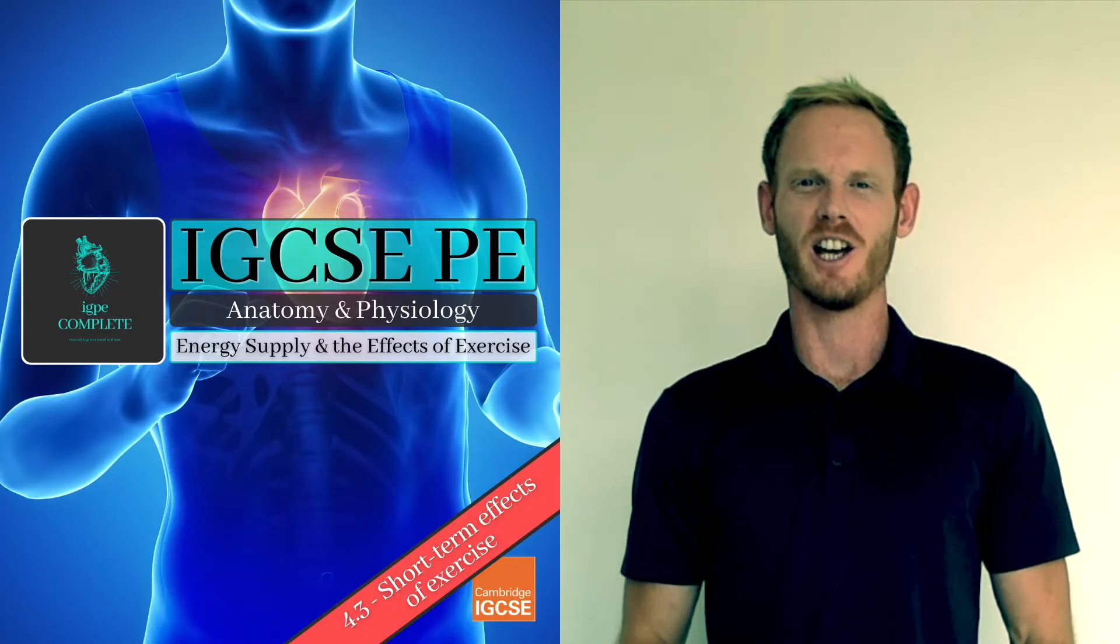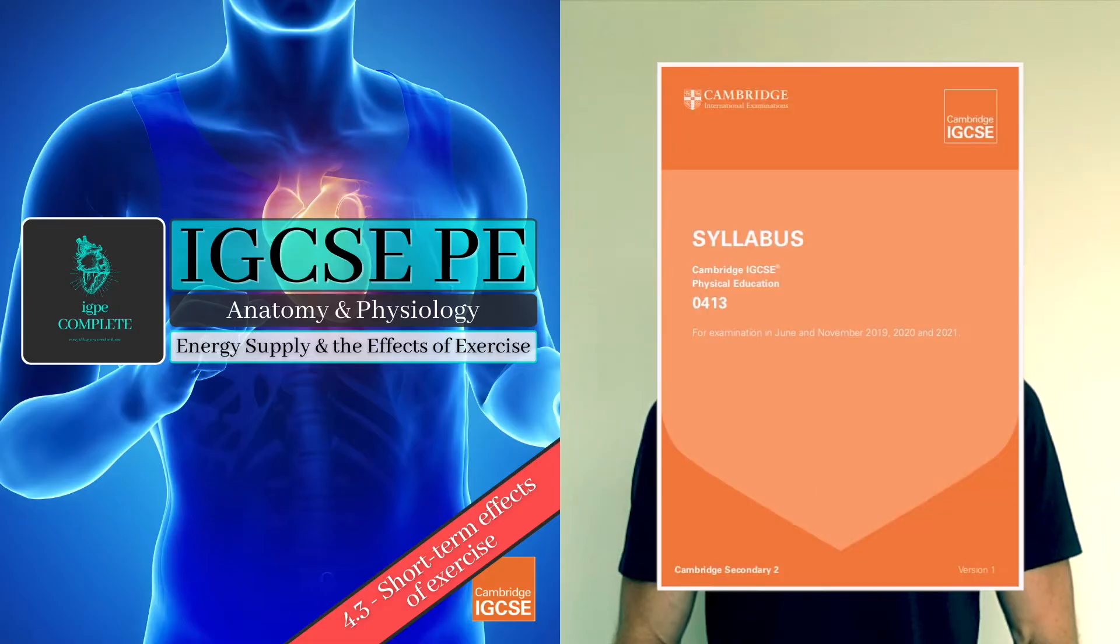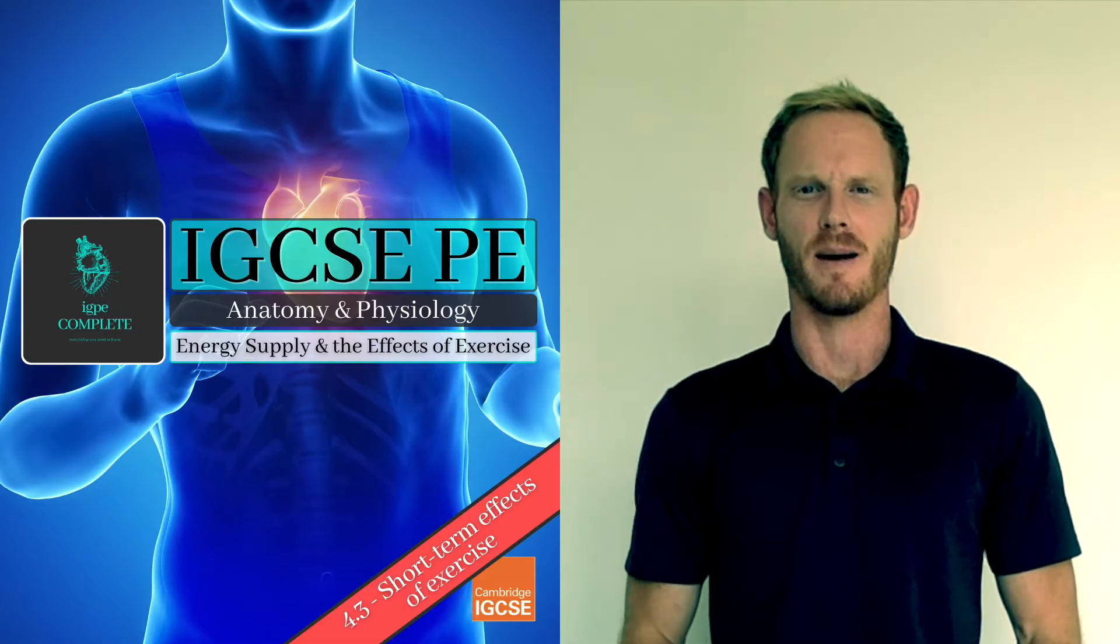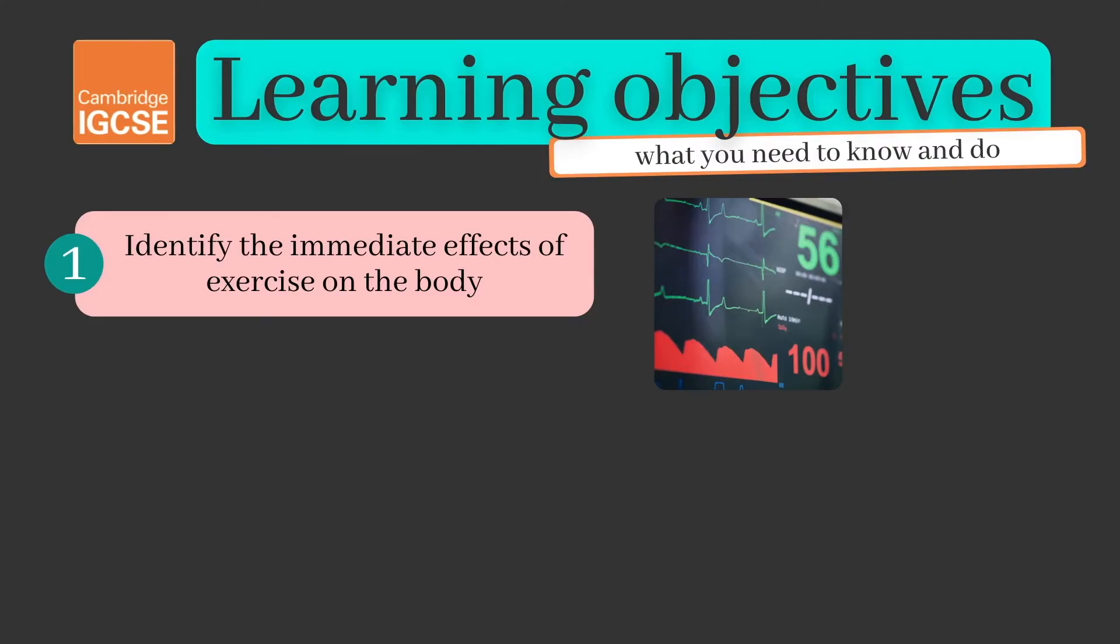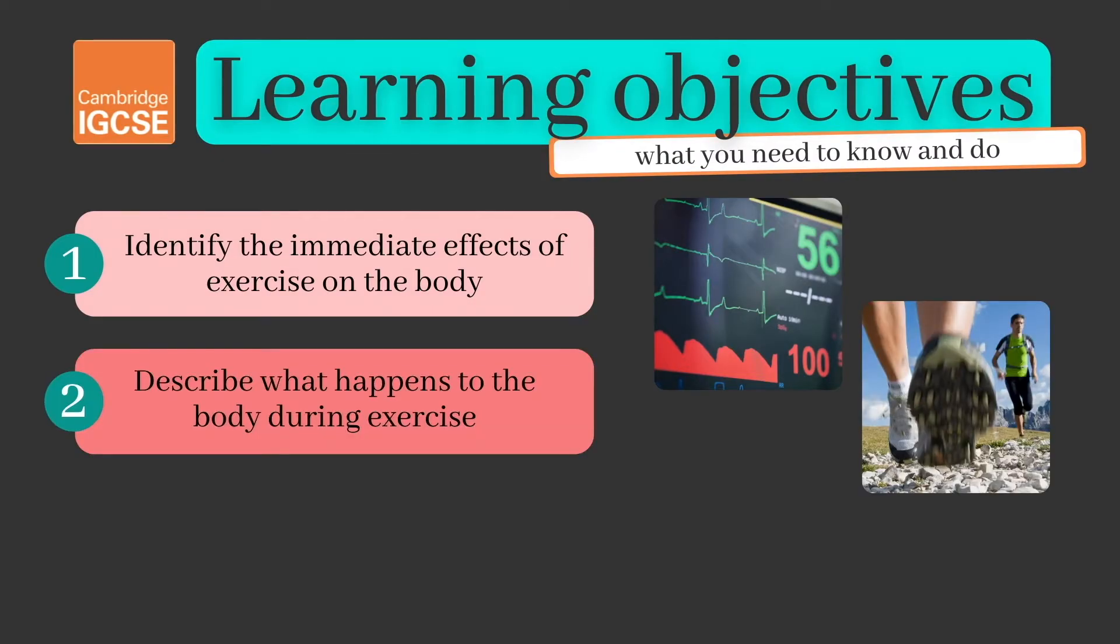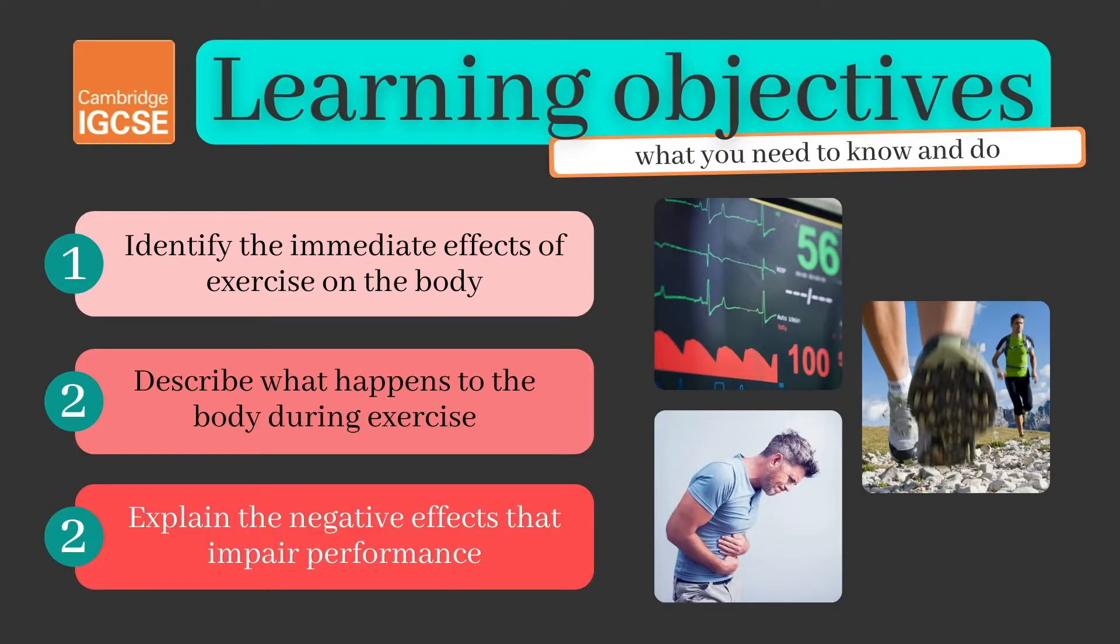As always we'll be following learning objectives straight from the Cambridge syllabus and we'll learn everything you need to know for your final exam. Our learning objectives today are to identify the immediate effects of exercise on the body, to describe what happens to the body during exercise and to explain the negative effects that impair performance.